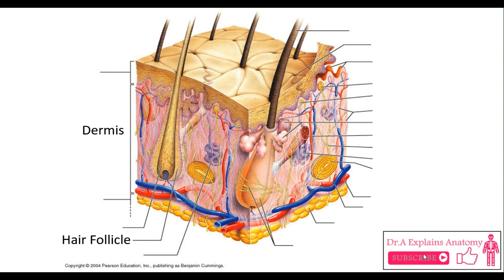This is a hair follicle. This is a hair root. Attached to the hair follicle, we have the erector pili muscle.